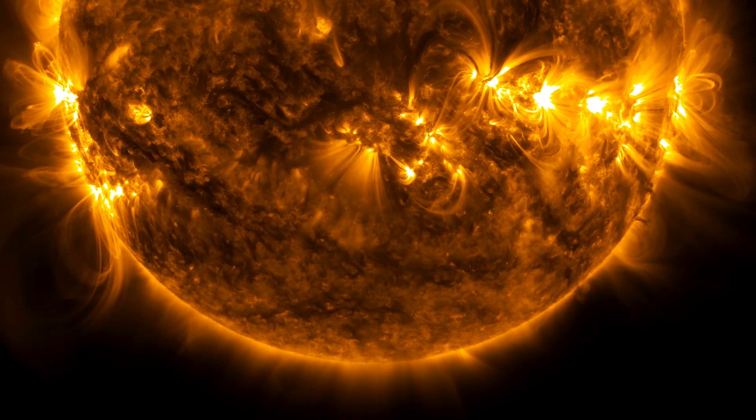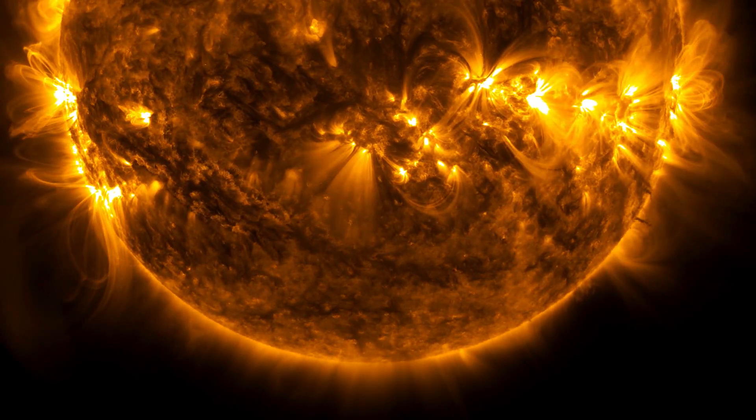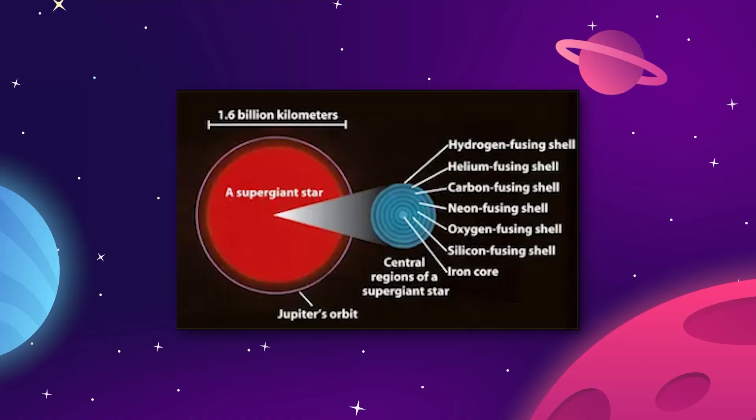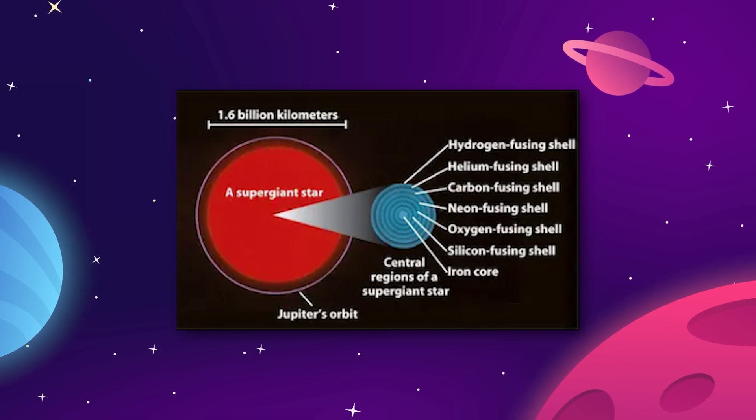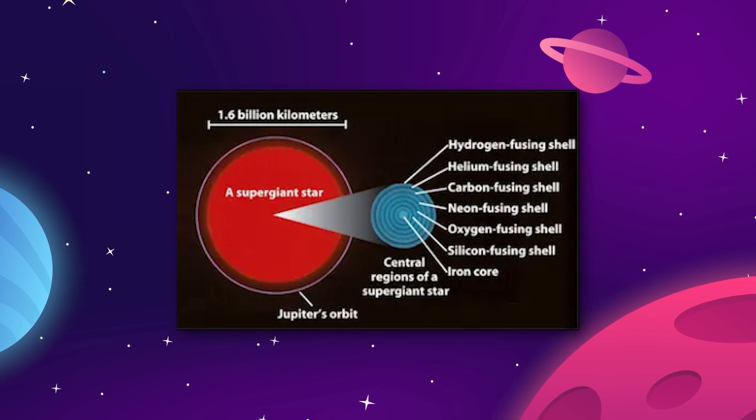But if a star gets big enough, the force of its gravity will start to fuse heavier elements than hydrogen. The fusion process will gradually work its way through heavier and heavier gases until it begins to fuse solid elements and eventually reaches iron.